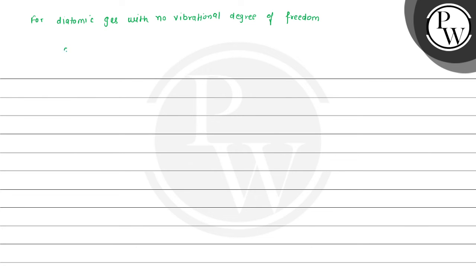For a diatomic gas ignoring vibrational degrees of freedom, Cv equals 3/2 R plus 2 times (1/2 R), which gives Cv equals 5/2 R.